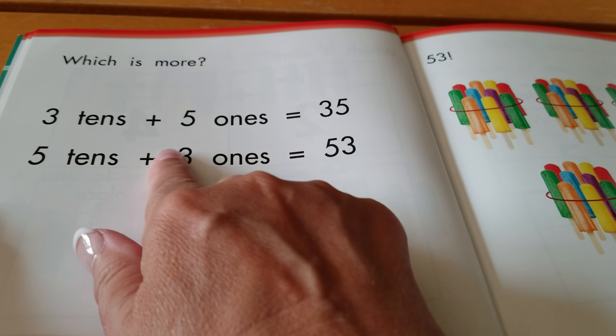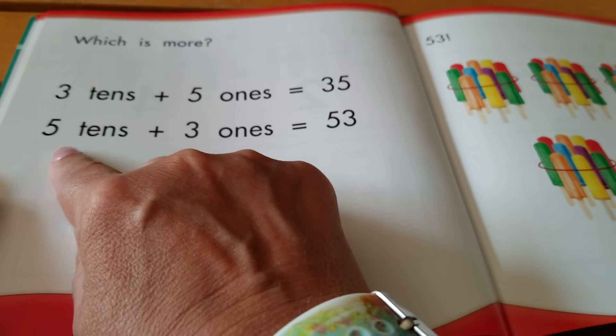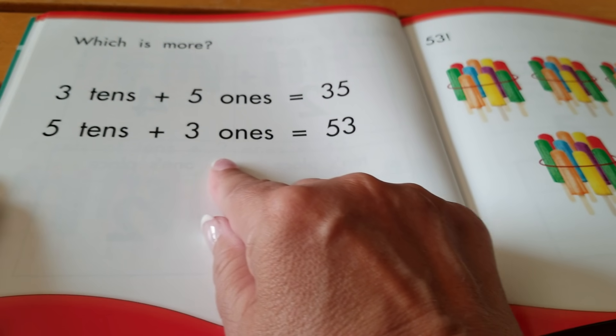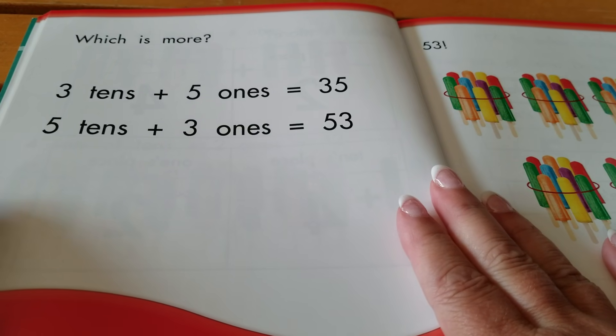Now, I have three tens, five ones equals thirty-five. Or, I have five tens and three ones equals fifty-three. Which one is bigger?